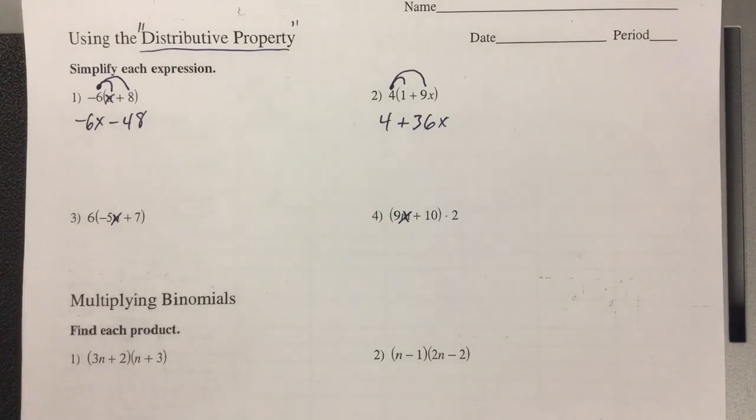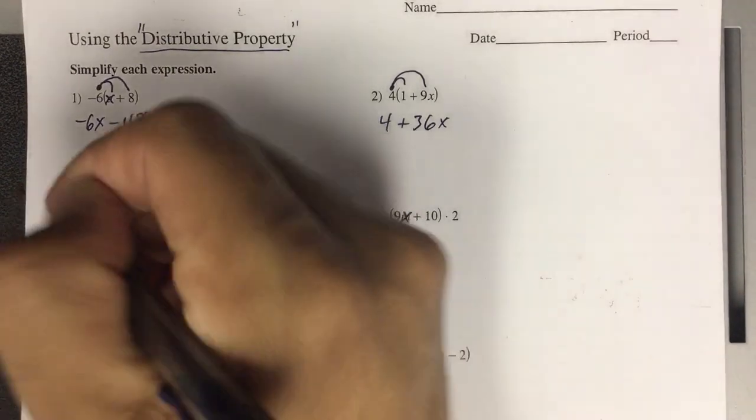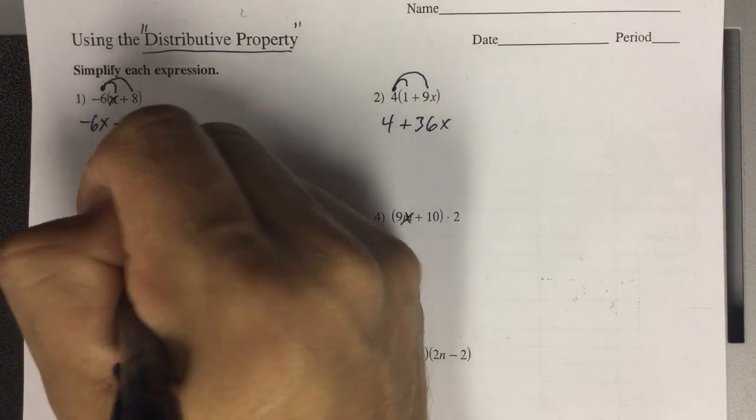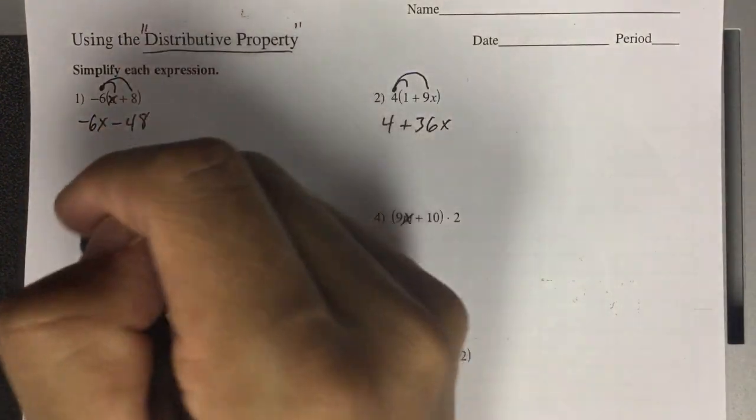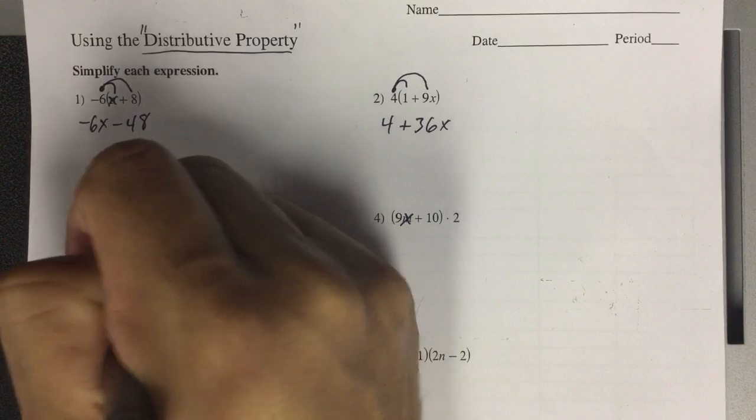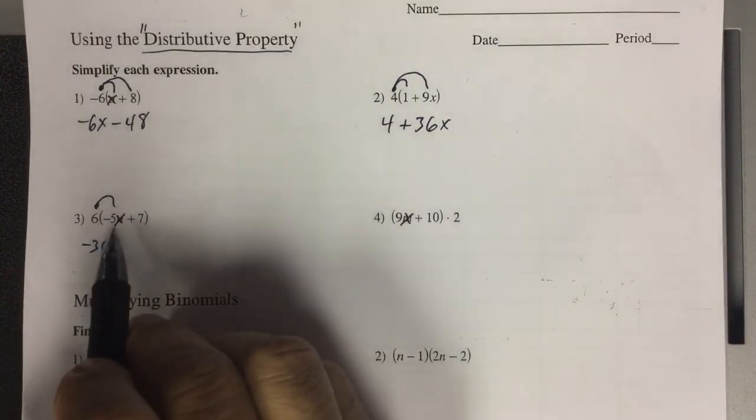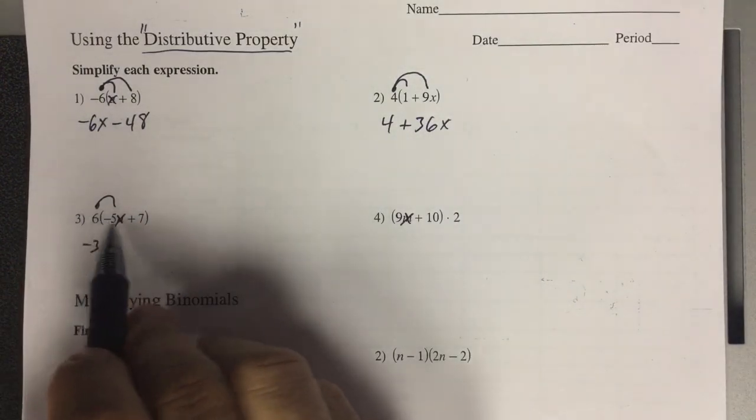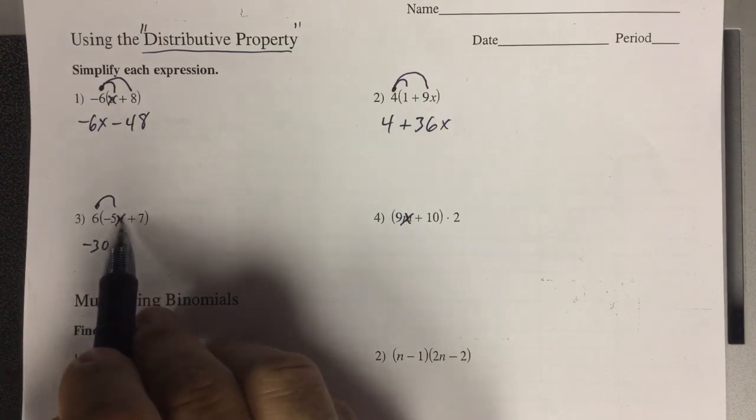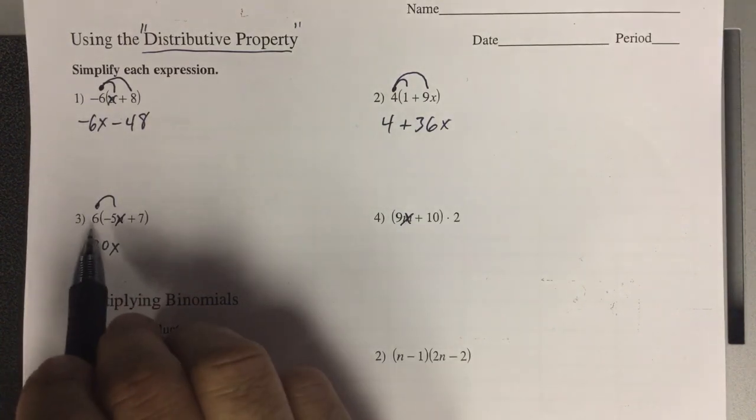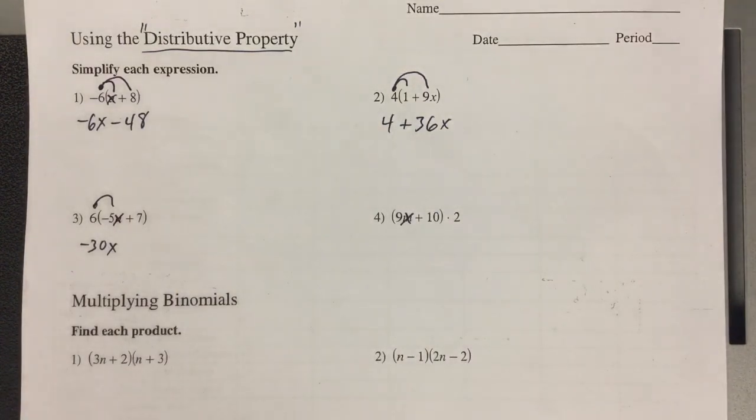So that makes it really easy. If I'm multiplying this 6 right here, 6 times negative 5 is negative 30, and you still have the x. So when I'm multiplying something with a variable and a number, I always put the numbers together and then the variables together. If there was a variable out here, I'd multiply that second.